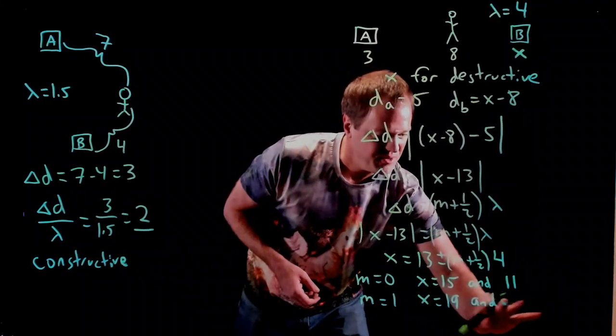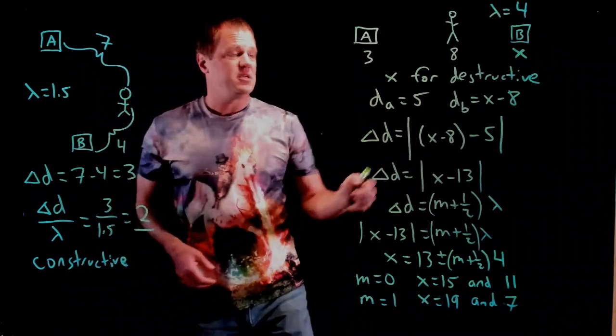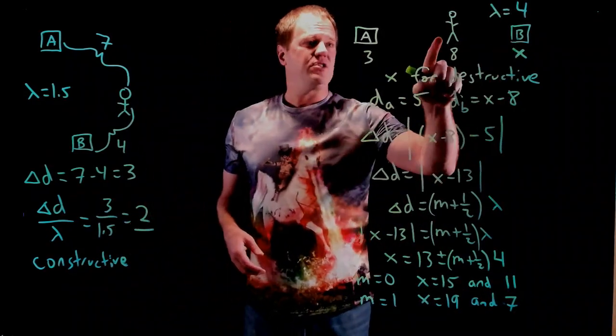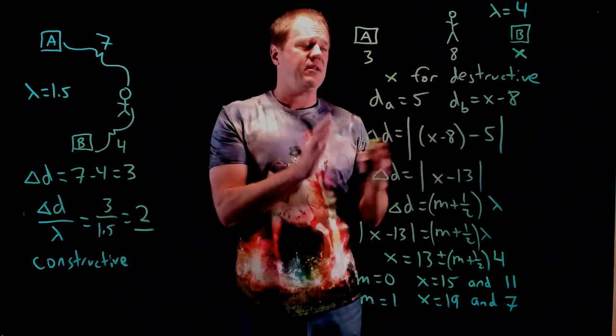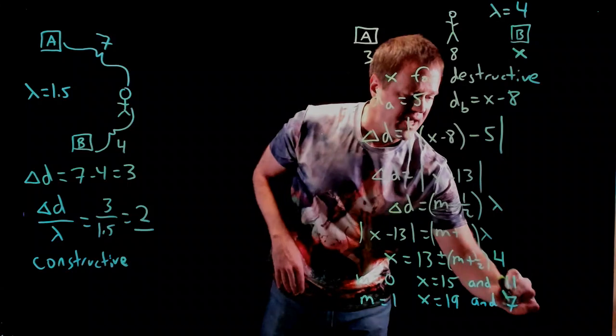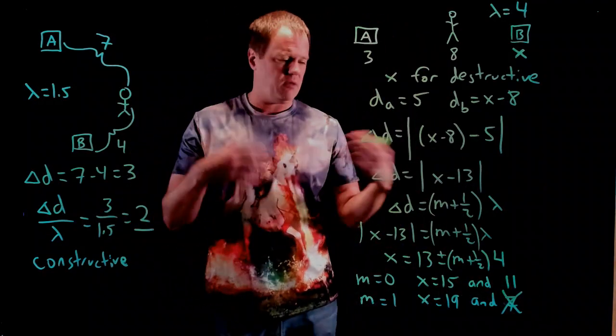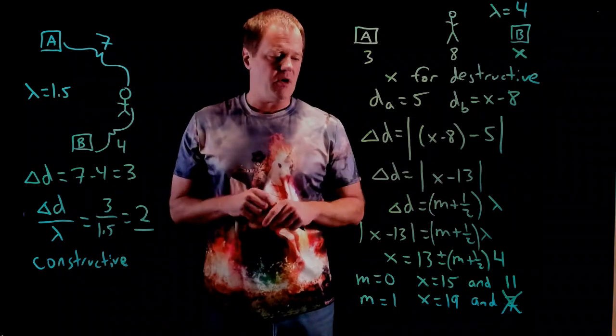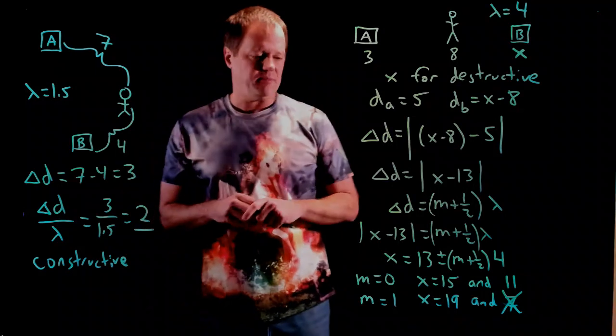The issue with that one is, it's kind of interesting, is that actually doesn't work. Because that's suggesting that B is over here, and all of our calculations are based on the fact that B is to the right. So, this one we actually can't use. So, there would be my first three, and you can throw in m equals two, and keep going if you want. There's actually an infinite number of solutions as we move further and further this direction.